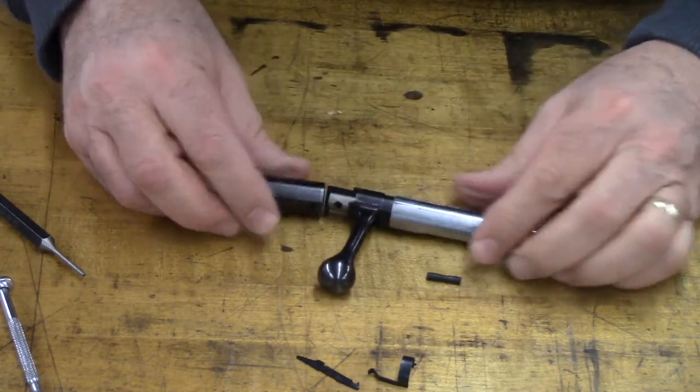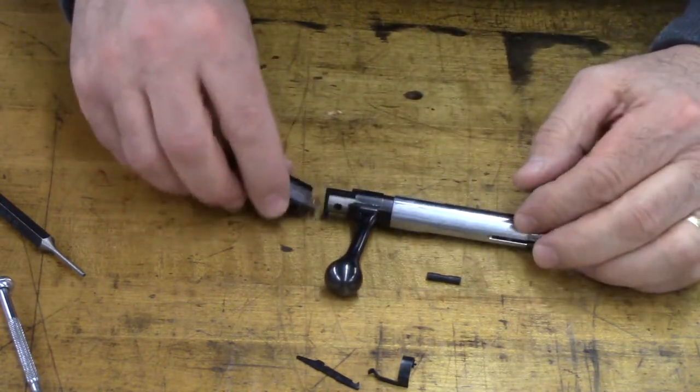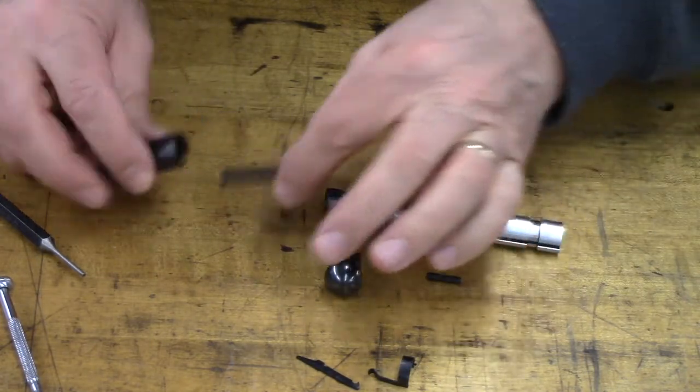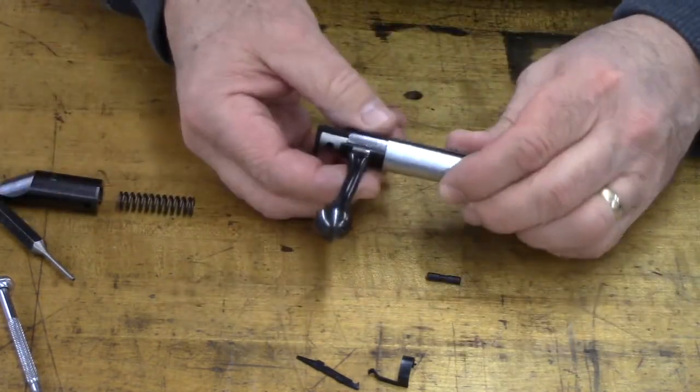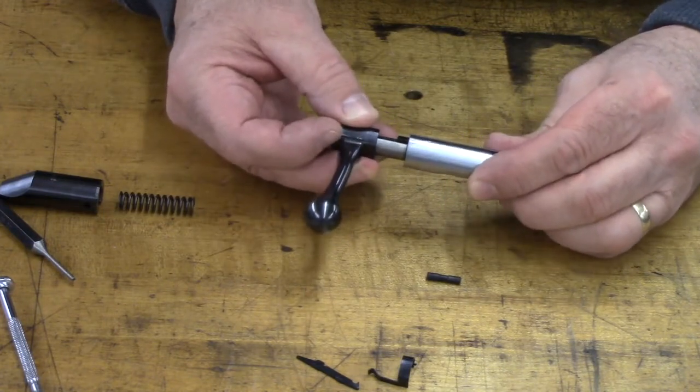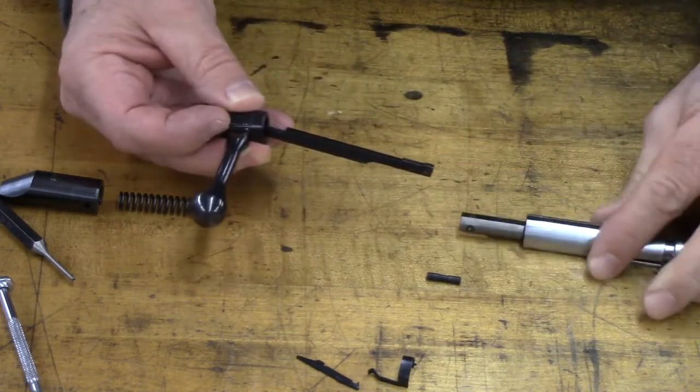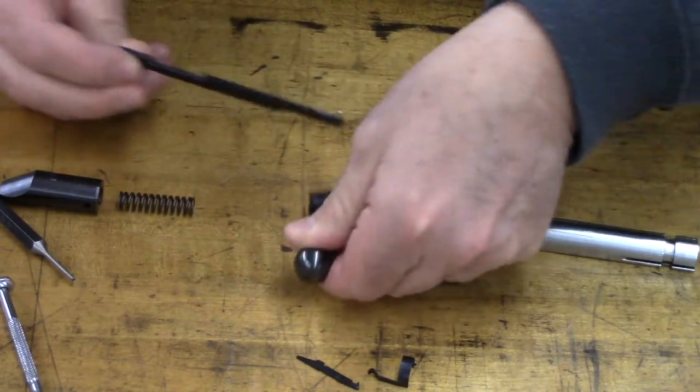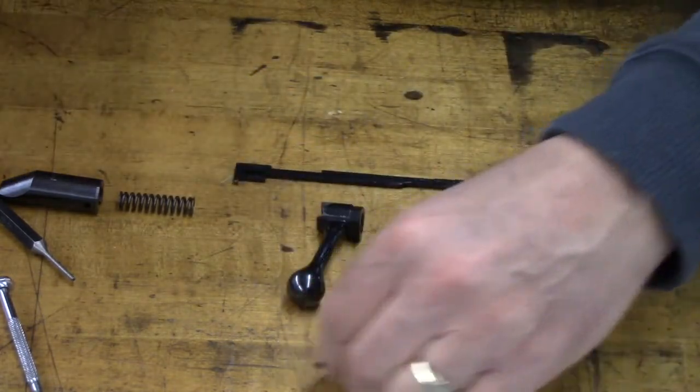So once I take this apart, I have the bolt shroud, firing pin spring, and now my bolt handle and firing pin will slide off together. They come out. And that is everything.